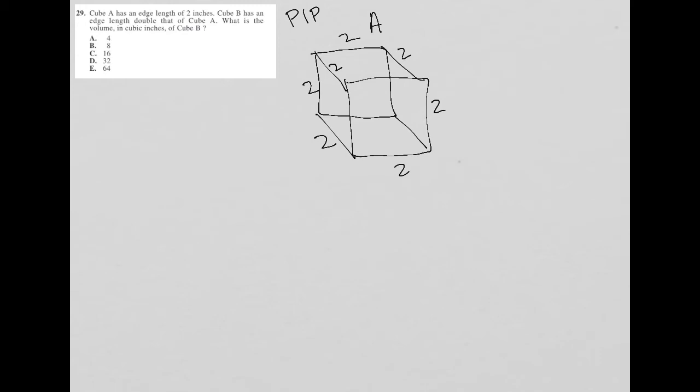Cube B has an edge length double that of cube A. Well, we know the length of cube A is two, so here's cube B and each of its edges is four.